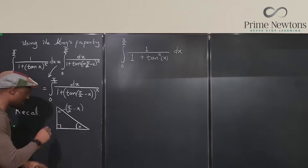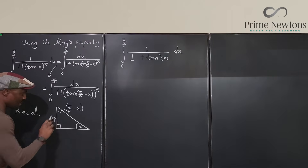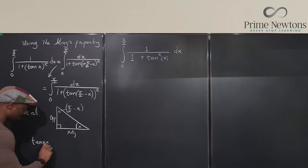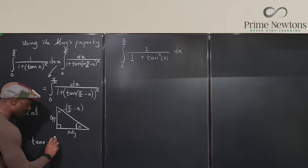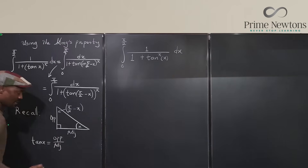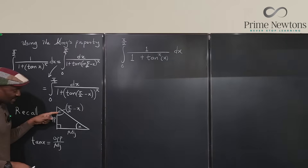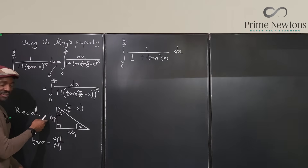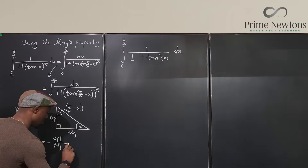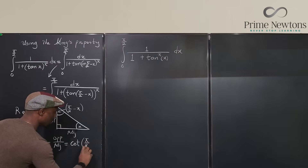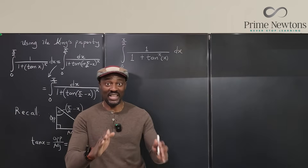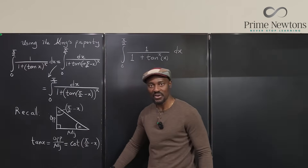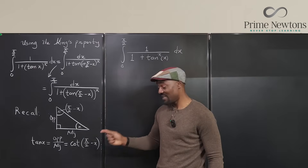The tangent of angle x is opposite over adjacent. Now if I want to compute the tangent of the complementary angle (pi over two minus x), it's adjacent over opposite — which is the cotangent of x. So we can clearly see that tan(pi over two minus x) equals cot(x), and that's where the key identity comes from.